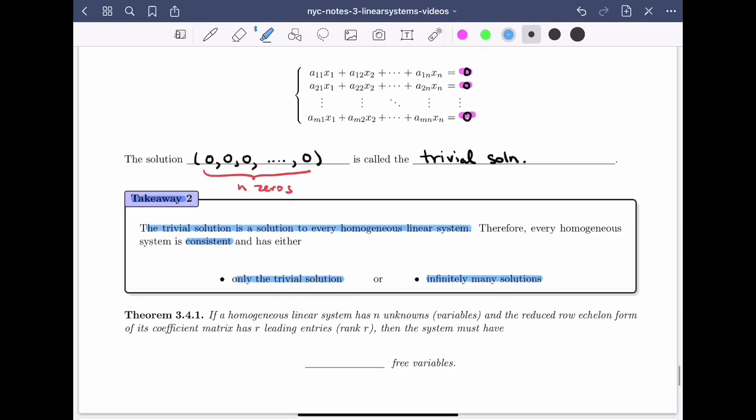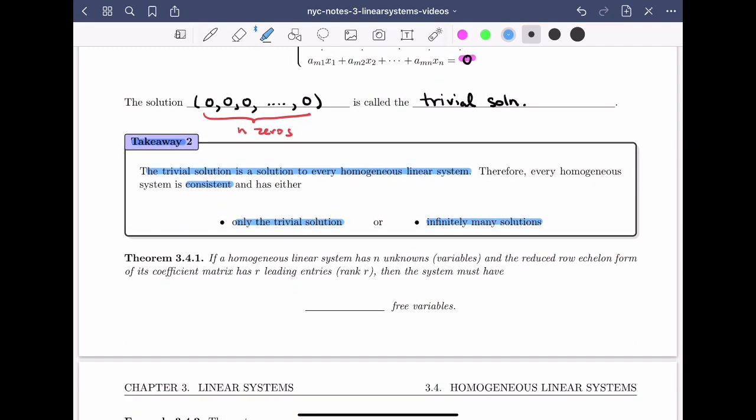We can be even a bit more precise. In theorem 3.4.1, we'd say the following: If a homogeneous linear system has n unknowns, and the reduced row echelon form of its coefficient matrix has r leading entries—we'd say it's rank r—then the system must have n minus r free variables. So remember that any variable that doesn't have a leading entry in its column becomes a free variable. So if you have n variables and you only have r leading entries, this leaves us with n minus r free variables.